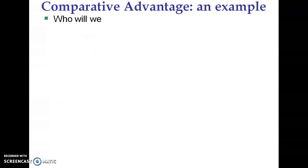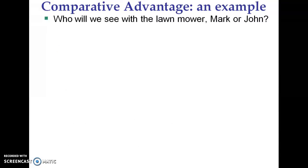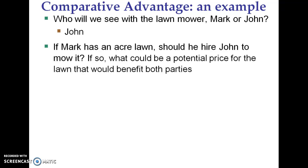Continuing on with this example — who would we see with the lawnmower, Mark or John? This really teases out what people should specialize in: absolute advantage or comparative advantage? Mark has the absolute advantage, whereas John has the comparative advantage when it comes to mowing lawns. So who are we going to see with the lawnmower? The individual with the comparative advantage — John.